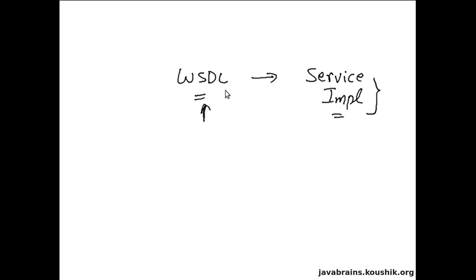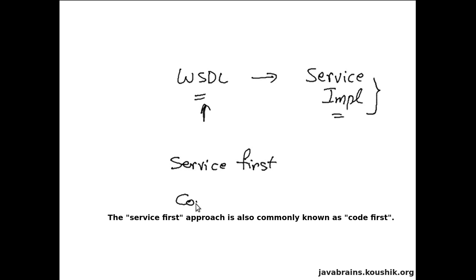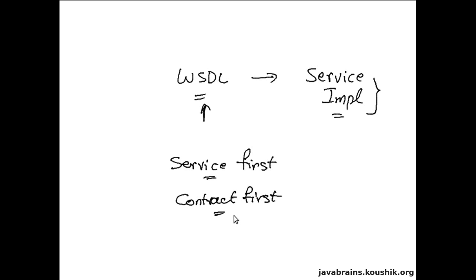This leads to two traditionally different ways of writing web services. The first way is called Service-First, and the second way is called Contract-First. Service-First means you write the service first and then generate the WSDL — which is what we've been doing all along. Contract-First means you write the WSDL first and then write the service implementation. You write the XML WSDL file first, and then generate the business service out of it. Both approaches are very much in use, each with certain advantages and disadvantages depending on the scenario.